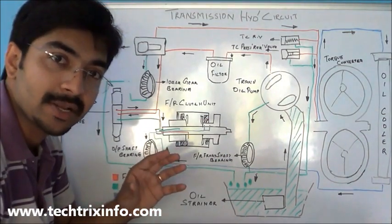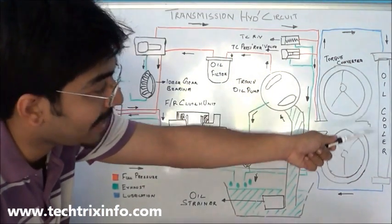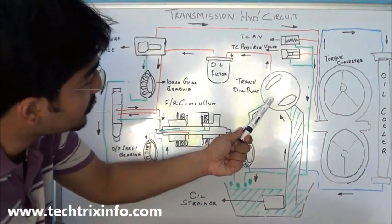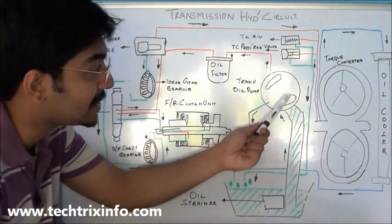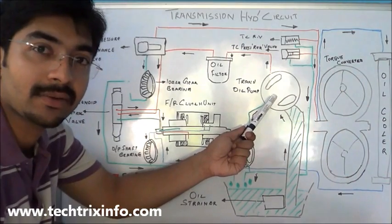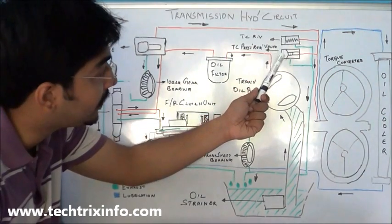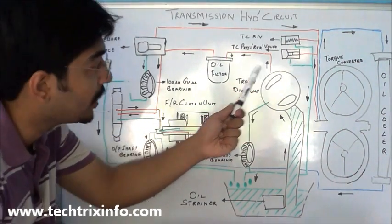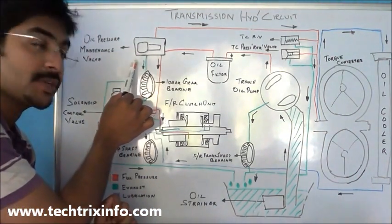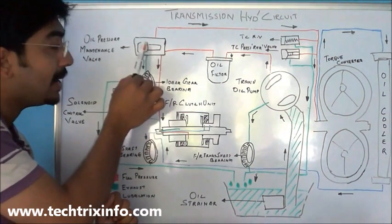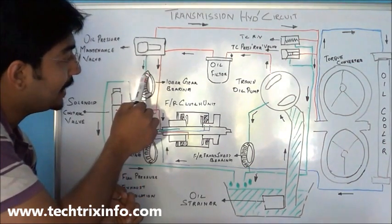Before that, let's identify the components. Here we have the torque converter. This is the oil cooler — the transmission oil cooler. This is the transmission oil pump, also called the charging pump — it's a crescent type pump. Here we have the torque converter relief valve and the torque converter pressure regulating valve. This is the oil filter — the transmission oil filter. Here we have the oil pressure maintenance valve, which maintains the oil pressure for the required operations. And this is the idler gear bearing.